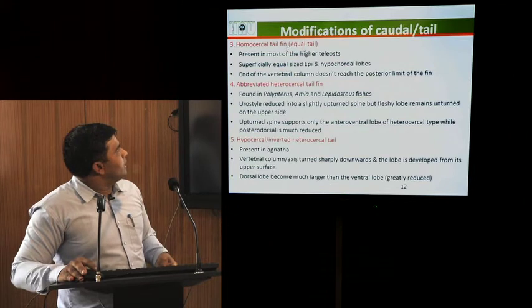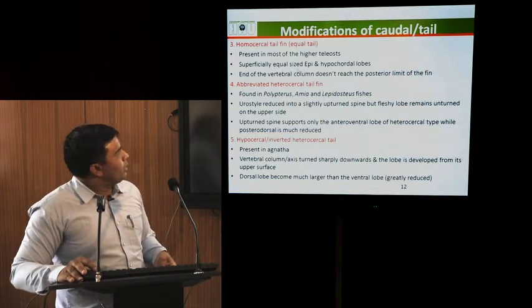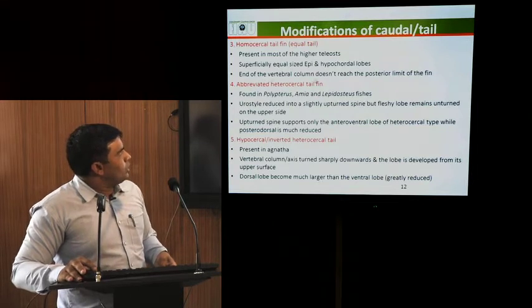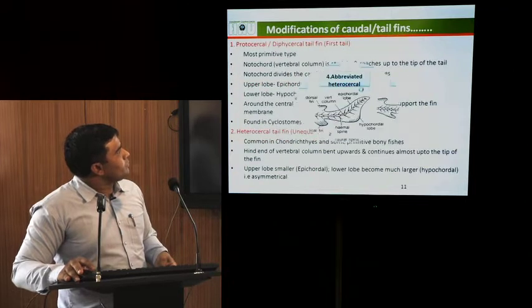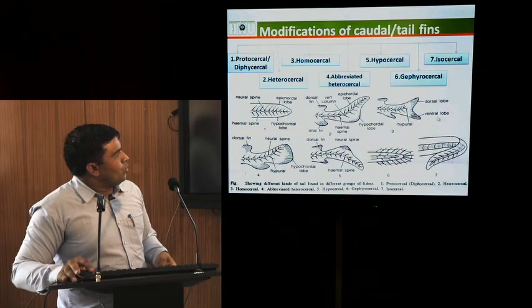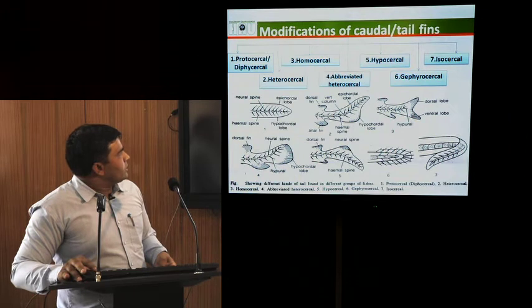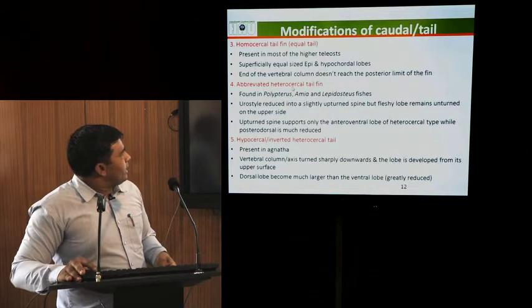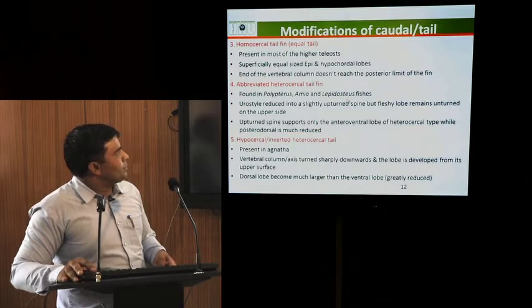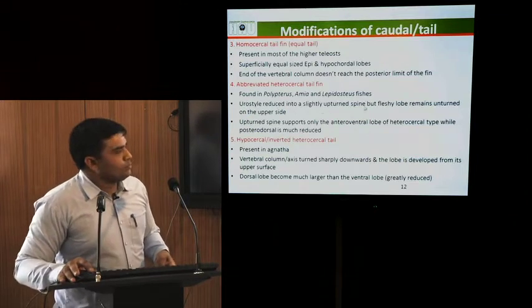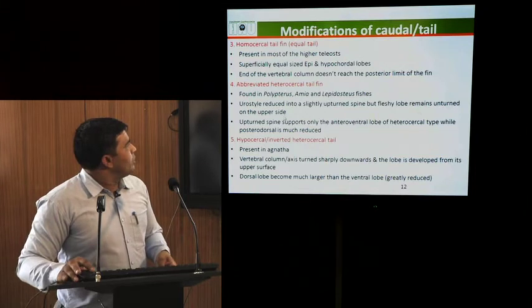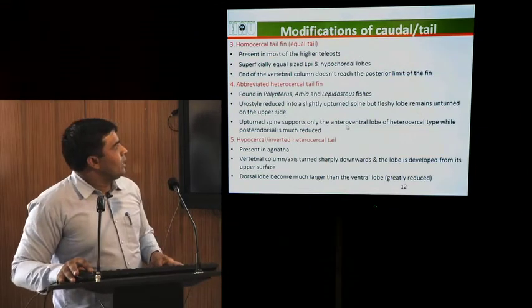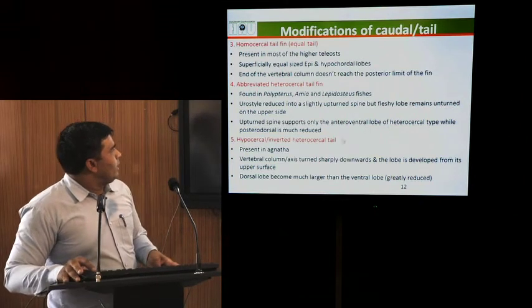The third is homocercal tail, in which the tail is in equal proportion. It is present in most higher teleosts; superficially the epichordal and hypochordal lobes are of equal size. The end of the vertebral column does not reach up to the tip, so dorsal and ventral lobes appear equal, hence called homocercal tail. The fourth is abbreviated heterocercal tail fin, found in Polypterus, Amia and Lepisosteus species. The urostyle is reduced into a slightly upturned spine, but the fleshy lobe remains unturned on the upper side. The upturned spine supports only the antero-ventral lobe of the heterocercal type, while the posterodorsal is much reduced.